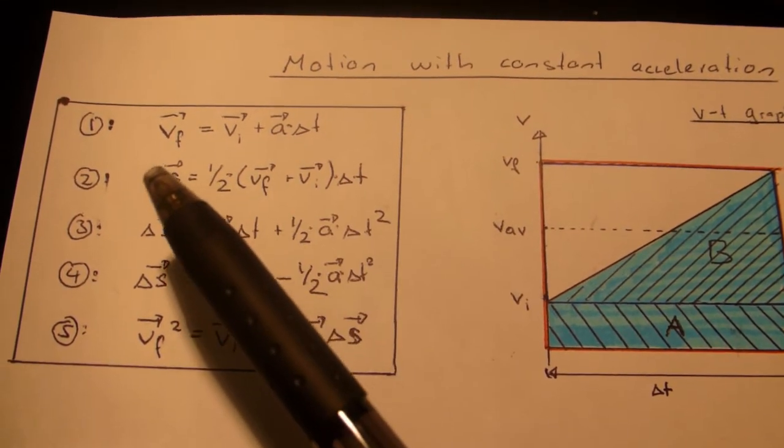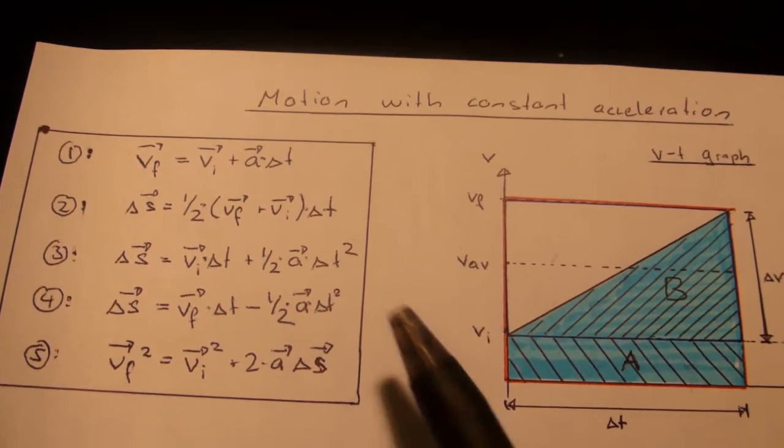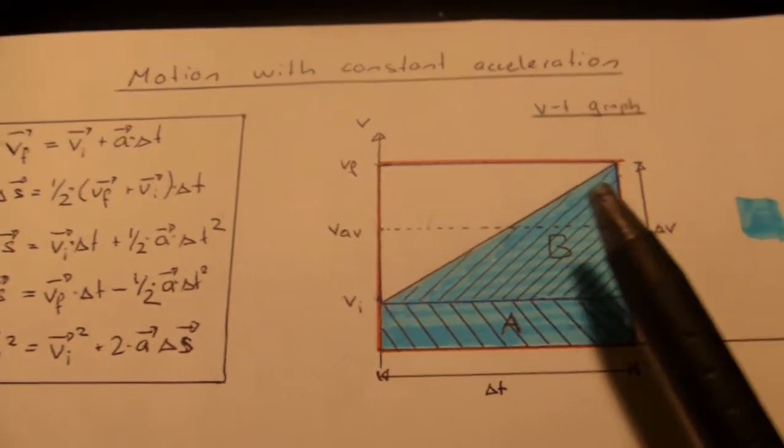Over here are the five equations for motion with constant acceleration. I'm going to look at how you can develop these equations by just looking at the V-t graph.